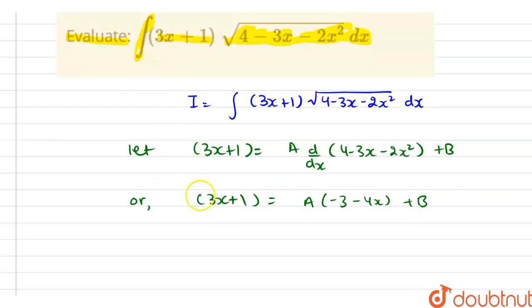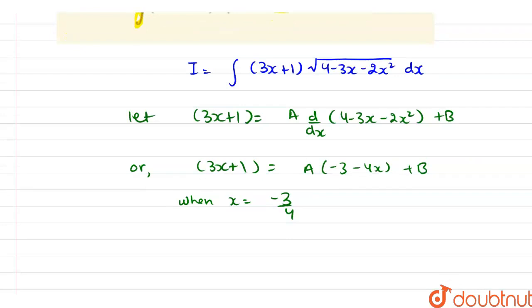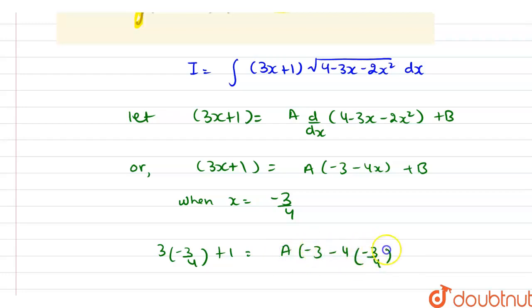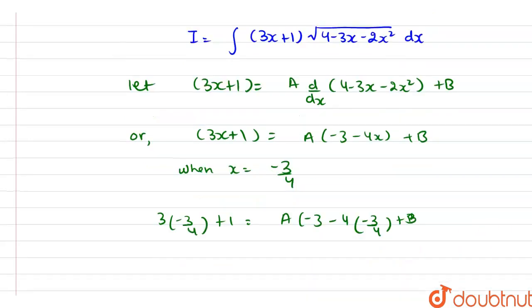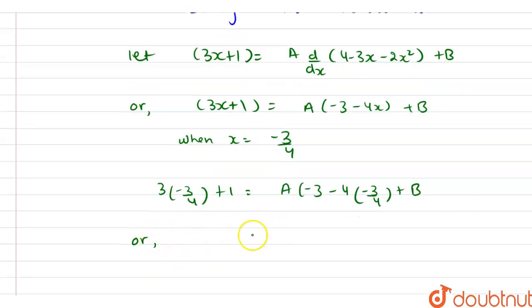Now when x is equal to minus 3 by 4, in the left hand side we have 3 into (minus 3 by 4) plus 1, and in the right hand side we have a into (minus 3 minus 4 into minus 3 by 4) plus b. After solving, we get minus 9 by 4 plus 1 equal to b.